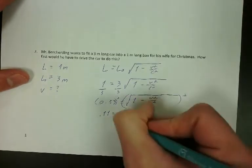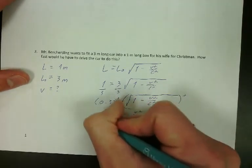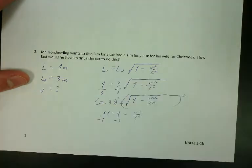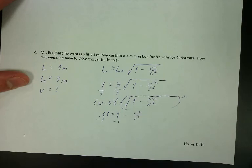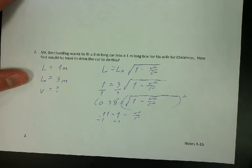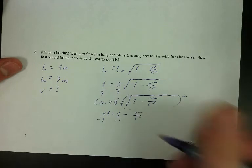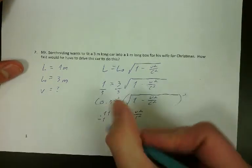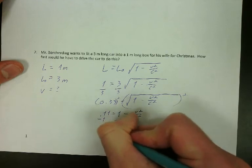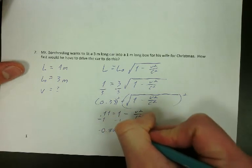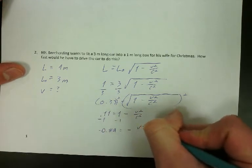When you do that, you get 0.8 repeating, essentially, 0.889. So we get negative 0.89 equals negative V squared over C squared.